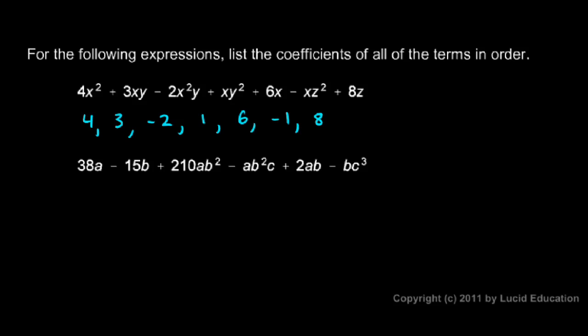On the bottom expression, listing the coefficients in order: the first is 38, the next is negative 15, the next is positive 210, then a 1 — there's no number so we understand it to be 1, but it's negative, so we have negative 1. Then a 2, and then another negative 1 coefficient.